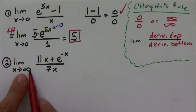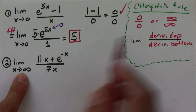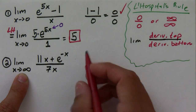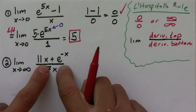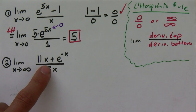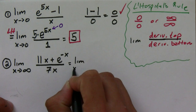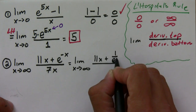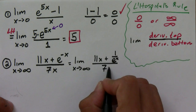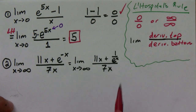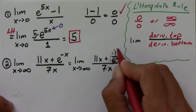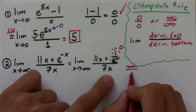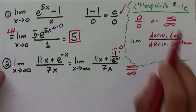Remember, the first thing we do is plug in our value. If we do that, notice that we get 11 times infinity. We can rewrite this as the limit as x goes to infinity of 11x plus 1 over e to the positive x, all over 7x. The 1 over e to the x term is going to 0, the numerator is going to infinity, and the denominator is going to infinity. So we satisfy the L'Hôpital's rule condition.